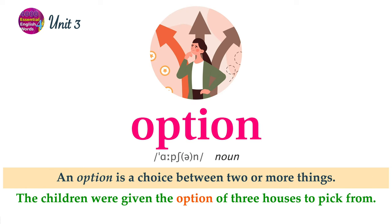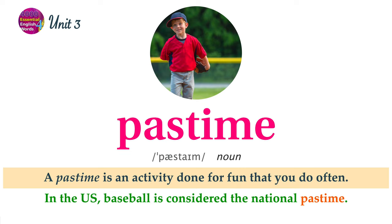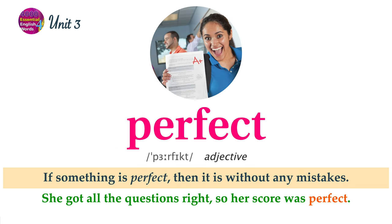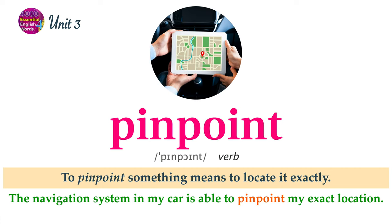An option is a choice between two or more things. The children were given the option of three houses to pick from. A pastime is an activity done for fun that you do often. In the U.S., baseball is considered the national pastime. If something is perfect, then it is without any mistakes. She got all the questions right, so her score was perfect. To pinpoint something means to locate it exactly. The navigation system in my car is able to pinpoint my exact location.